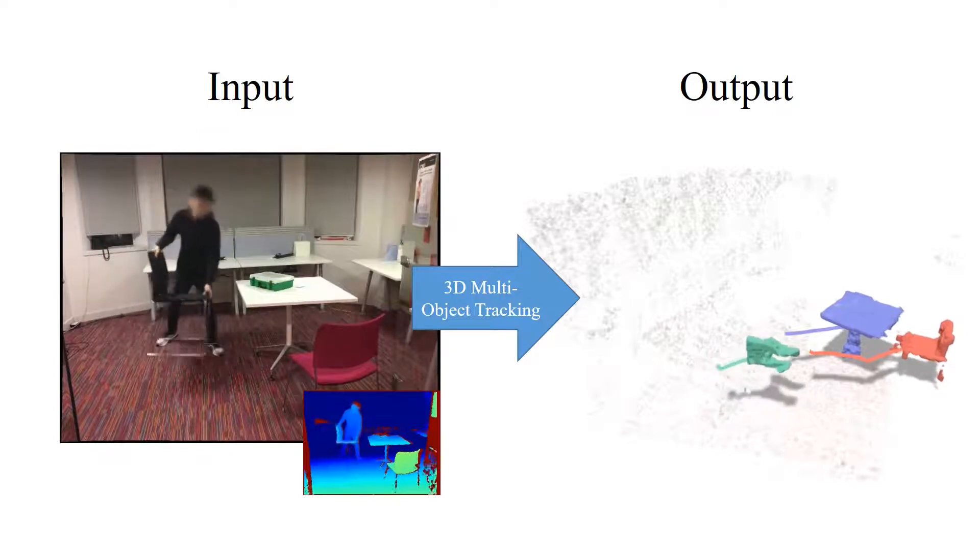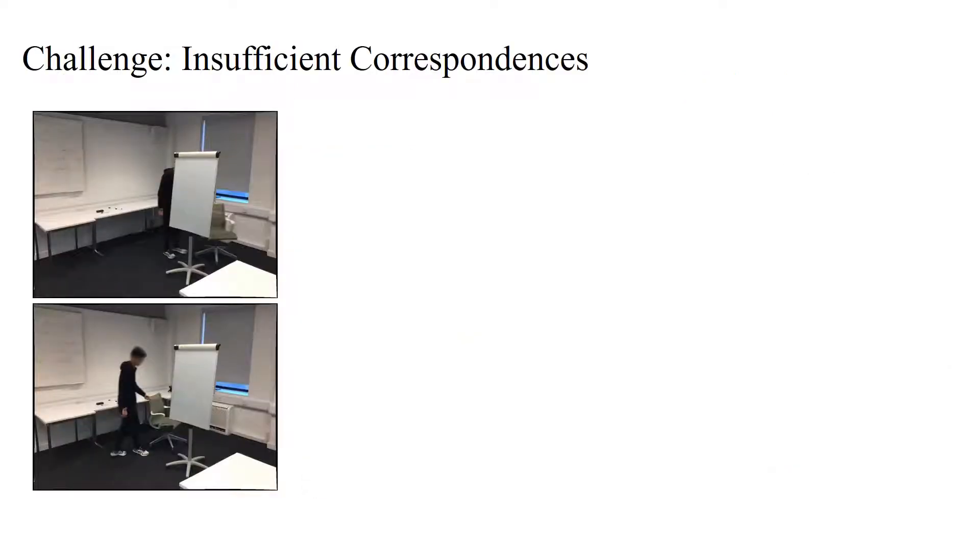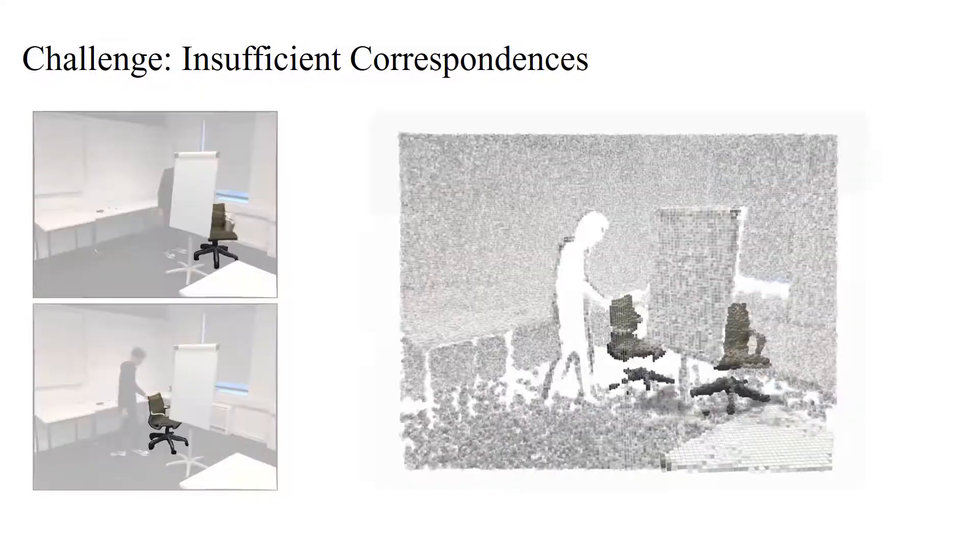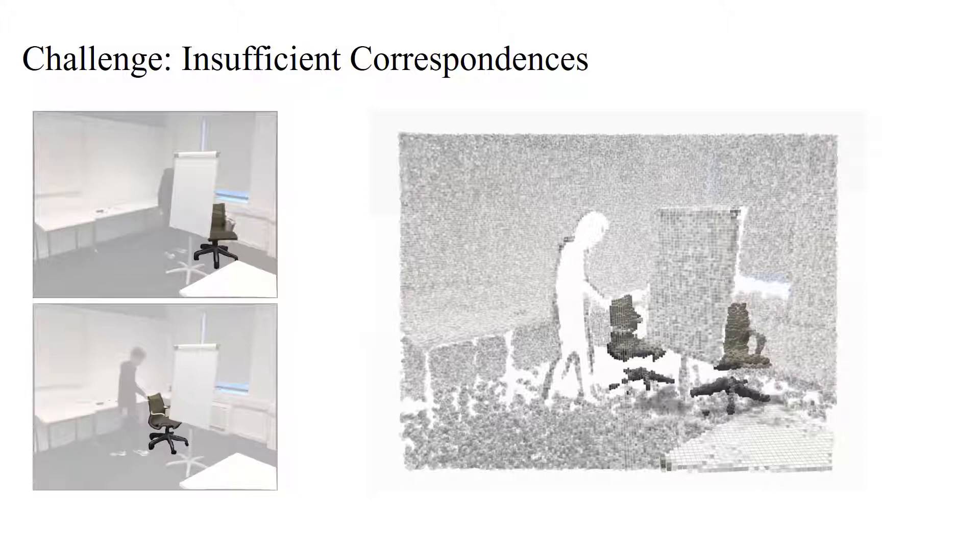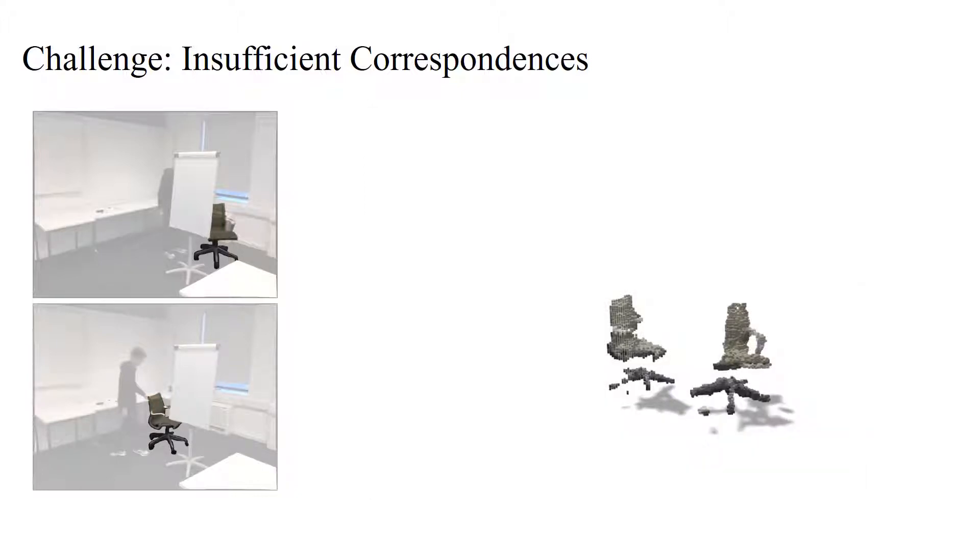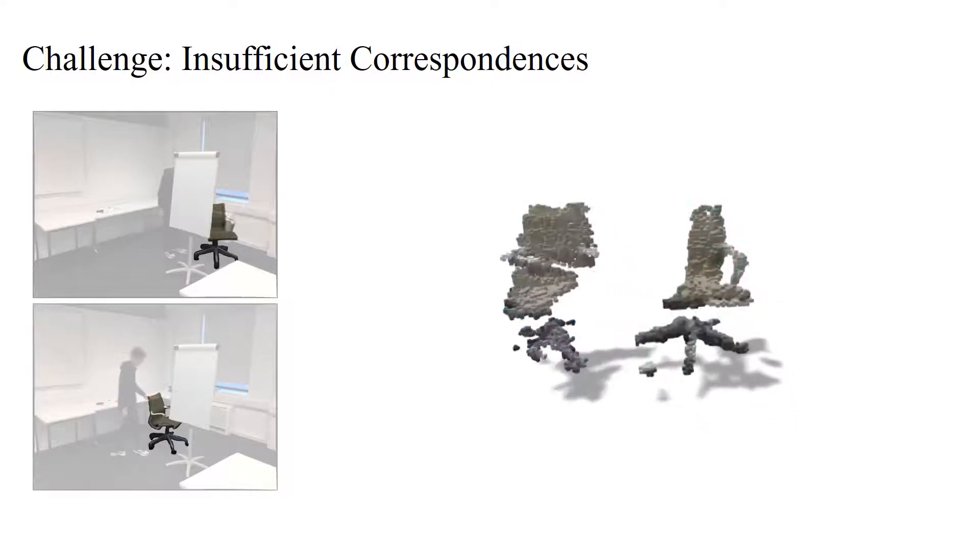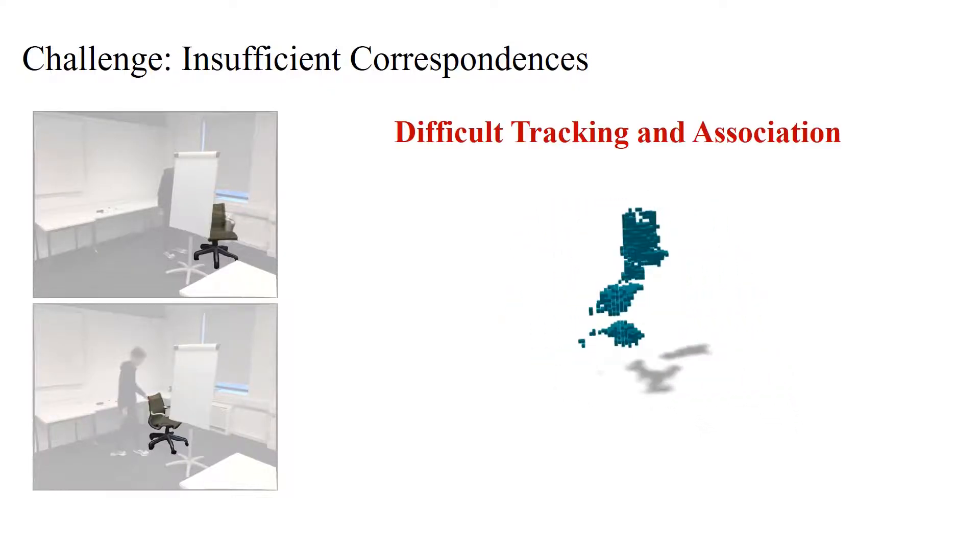Tracking objects between different frame observations can be very challenging in many real-world scenarios, such as occlusions, significant motion, or range sensor noise. For instance, the chair moving behind the occluding whiteboard results in very different views of the chair, leading to a limited set of correspondences, which makes it difficult to associate the objects over time.